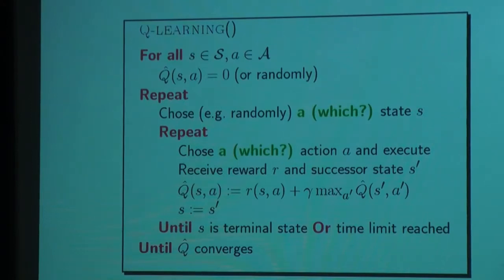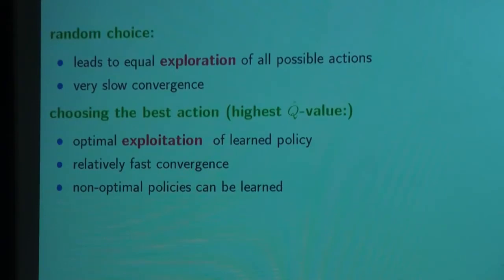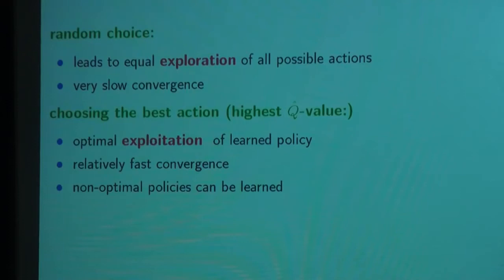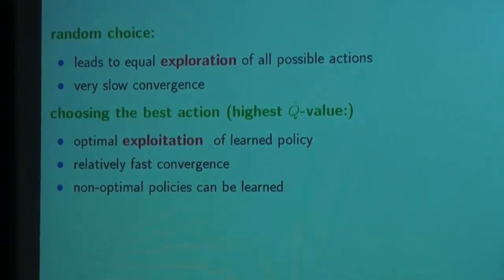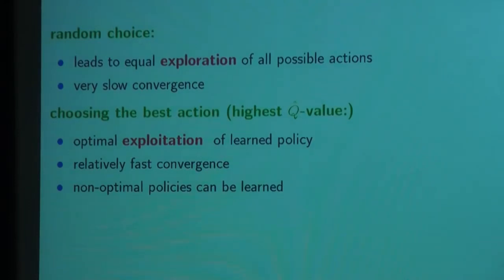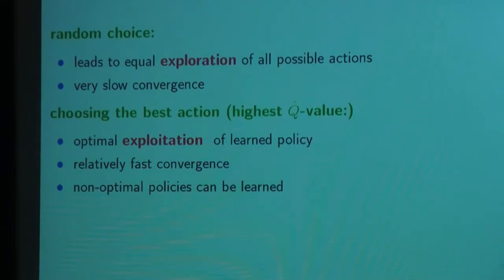Fair means that in an infinitely long sequence, all actions have to be selected infinitely often. Whenever we do this, we have convergence, but it's a matter of speed — how long does it take until we have a good policy? This strongly depends on how we select our actions. There are two extreme possibilities: random action selection, which we call exploration, and exploitation, where we always select the best action. In practice, people do something in between. The epsilon-greedy strategy selects a random action with probability epsilon, which typically should not be too large.